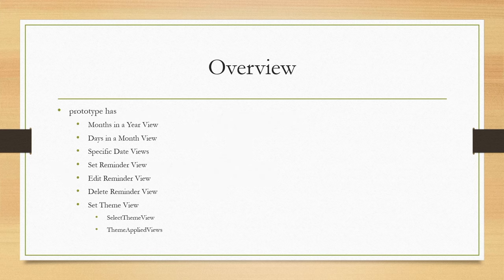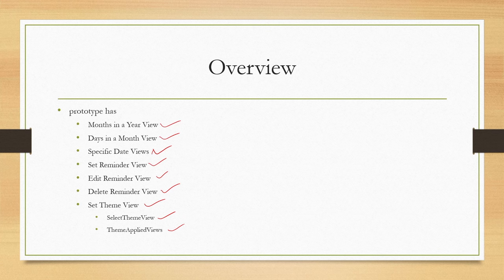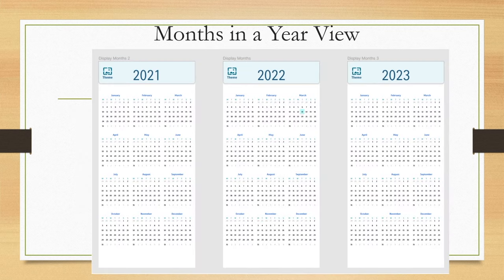The prototype covers several functions: months in a year, days in a month, specific date, set reminder, edit reminder, delete reminder, set theme, and theme applied views. Note that not all functions from the hierarchy are covered here — synchronization is left out.